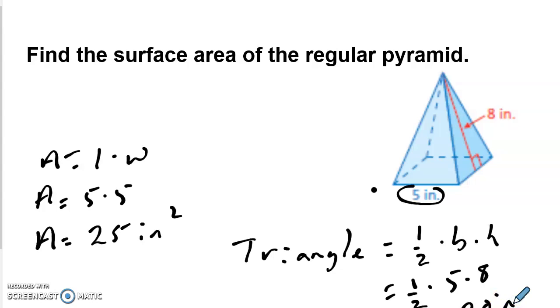Now, you have a square pyramid, so that means that you have four identical triangles. So we're just going to multiply that by 4, 80 square inches. The surface area of the entire thing, you add those two together. So I have this, and I have this. So the surface area of this pyramid is 105 inches squared.